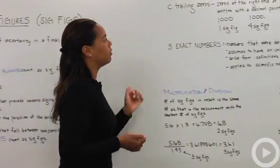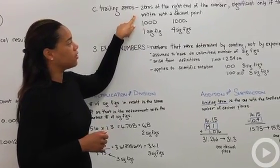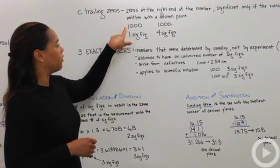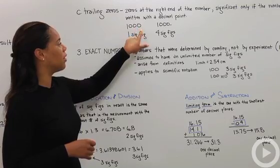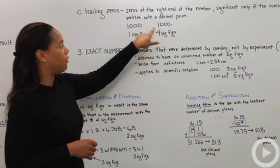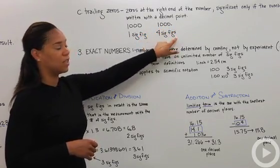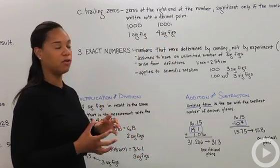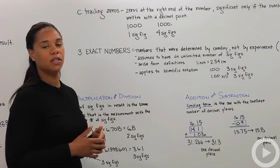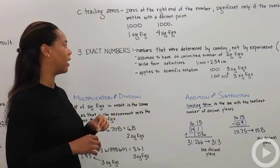The third class of zeros are trailing zeros. These guys are zeros at the end of the number and they're significant only if the number is written with a decimal point. So for instance, if you have 1000 just written 1 0 0 0, the only number that's significant here is the non-zero integer 1. However, if it's written 1 0 0 0 with a decimal place, then you have four significant figures. So I guarantee that the zeros, whether they be on the right hand side or the left hand side, are going to be two of your pitfalls. So it's really important to understand how the zeros on the front end work and how the zeros on the back end work.